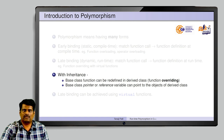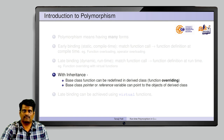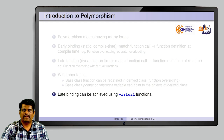Two very important key concepts related to polymorphism that come with inheritance are: first, function overriding, where base class functions can be redefined in the derived class; and second, a base class pointer or reference variable can be used to point to objects of the derived class. Late binding can be achieved using virtual functions in C++.